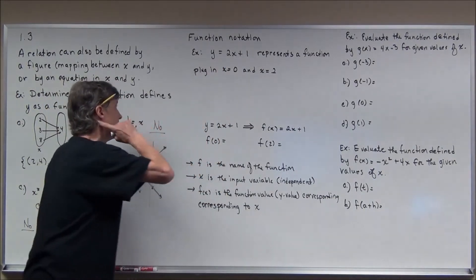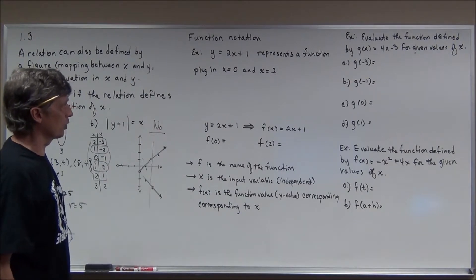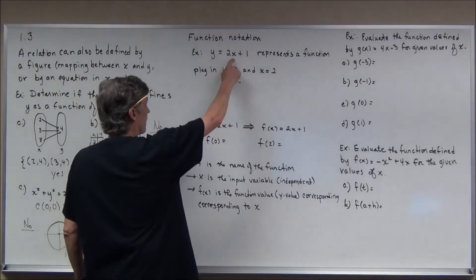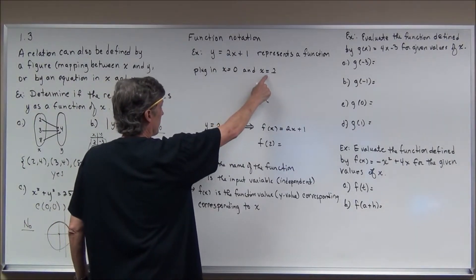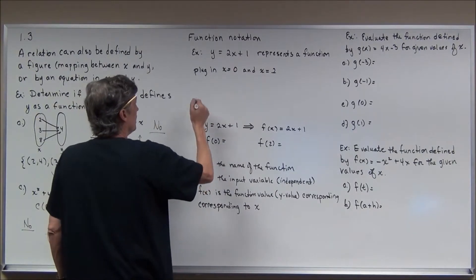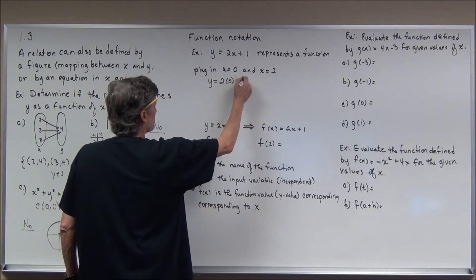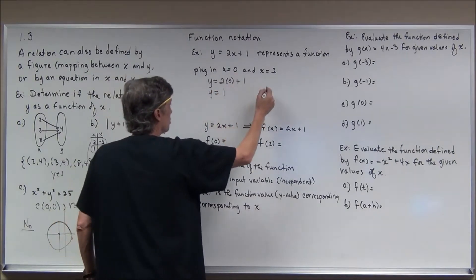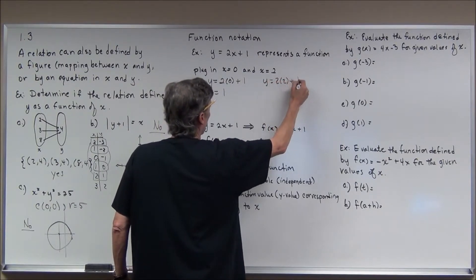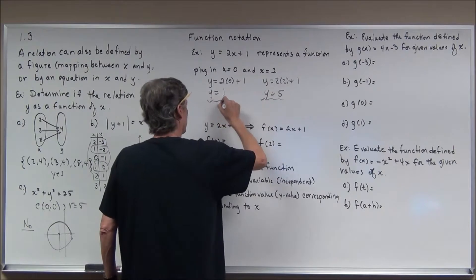This linear function has degree 1 for x and y; the graph is a line. I want to plug 0 in for x and find the corresponding y-value, and then plug in 2 for x. If I plug 0 in: 2 times 0 plus 1, y equals 1. If I plug 2 in: y equals 2 times 2 plus 1, y equals 5.